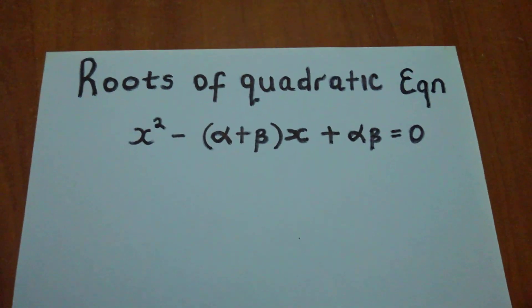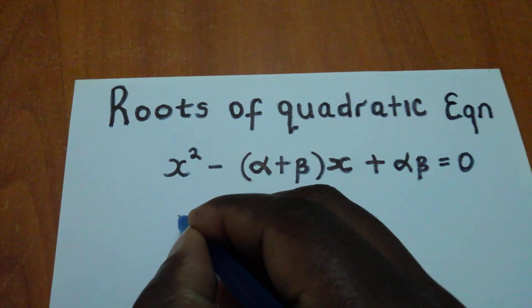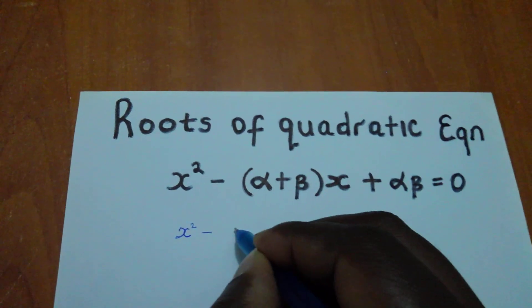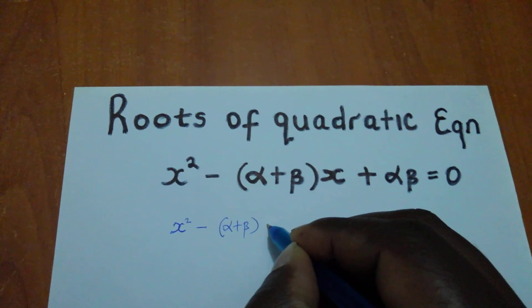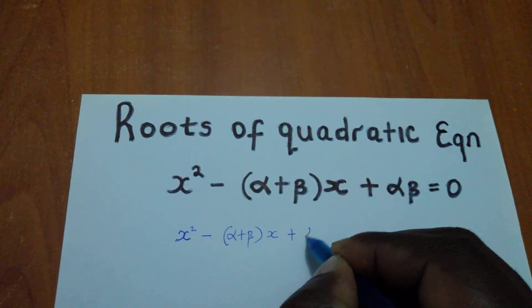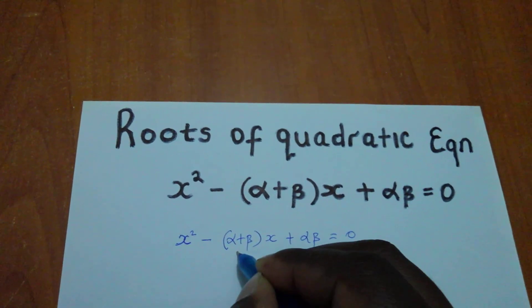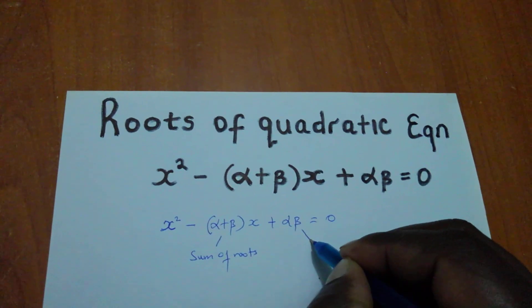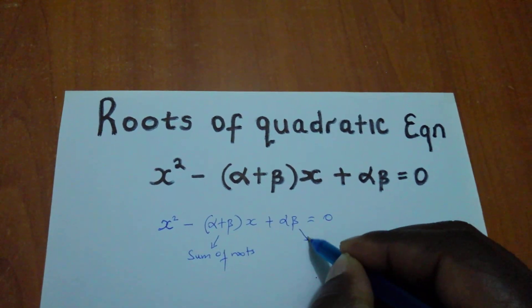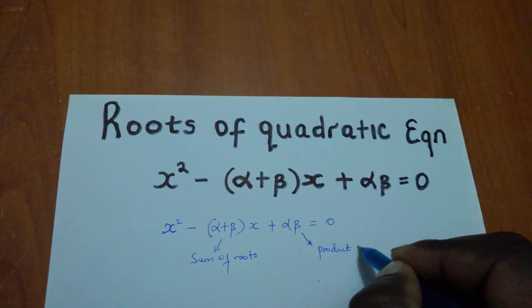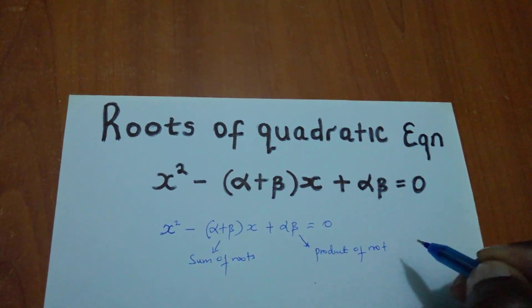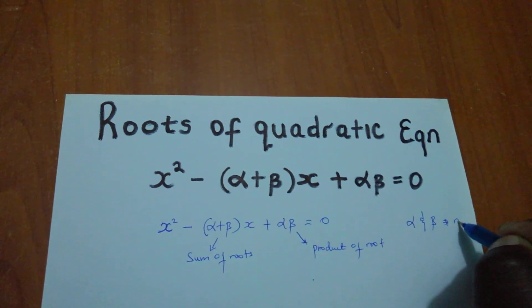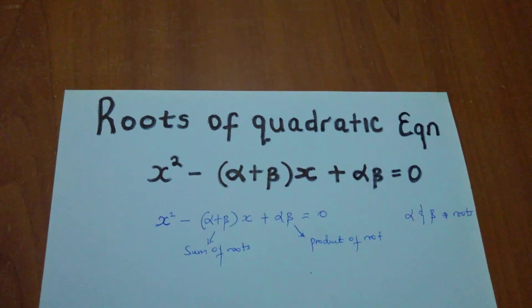So after explaining that, let me rewrite that expression again. x squared minus alpha plus beta x plus alpha beta equals to 0. This one is taken as the sum of roots, this one is taken as the product of the roots. Alpha and beta are taken to be our roots for this particular topic.